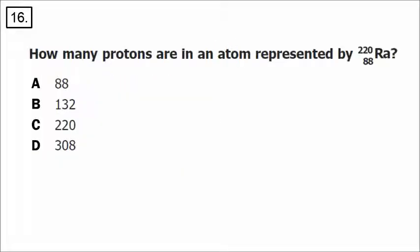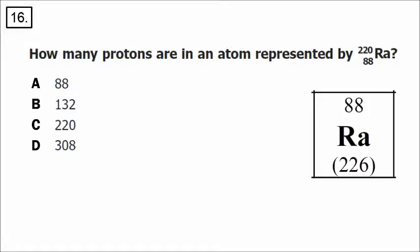In number 16, we have the symbol for radium, Ra. The mass is 220 and the atomic number is 88. The atomic number is the number of protons, so radium has 88 protons — that is the correct answer.